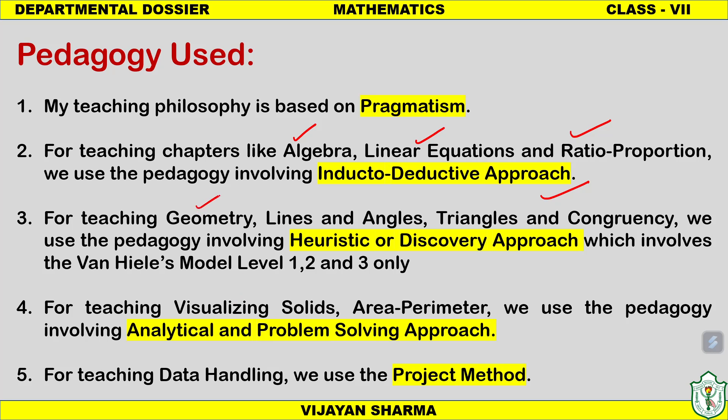For teaching geometry topics like lines and angles, triangles, congruency, and other geometric shapes involving a diagrammatic approach, we use the heuristic and discovery approach. Students must discover the properties of triangles, lines and angles, or any geometric figure themselves — visualizing figures in their notebooks and discovering the various approaches for solving questions. This is called the heuristic or discovery approach and is based on Van Hiele's model at levels 1, 2, and 3.